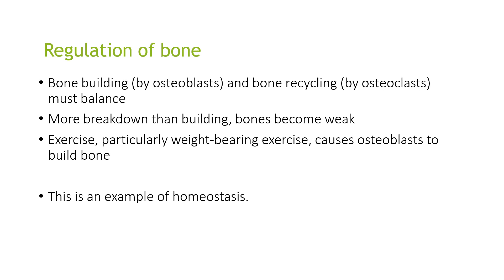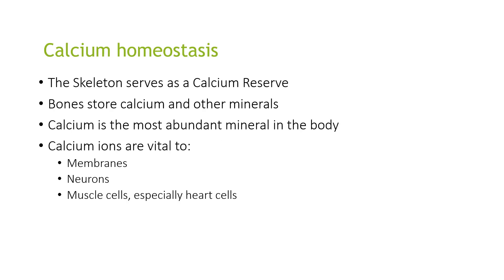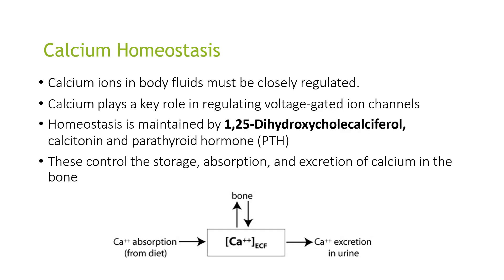Regarding bone regulation, bone building by osteoblasts and bone recycling by osteoclasts must balance. If there is more breakdown than building, bones become weak. Exercise, particularly weight-bearing exercise, causes osteoblasts to build bone — this is an example of homeostasis. For calcium homeostasis, the skeleton serves as a calcium reserve; bones store calcium along with other minerals. Calcium is the most abundant mineral in the body and is vital to membranes, neurons, muscle cells and especially heart cells. Calcium ions in the body's fluids must be closely regulated, as calcium plays a key role in regulating voltage-gated ion channels. Homeostasis is maintained by 1,25-dihydroxycholecalciferol, calcitonin and parathyroid hormone, which control the storage, absorption and excretion of calcium in the bone.